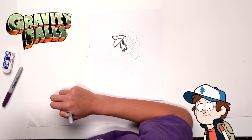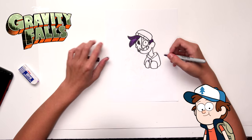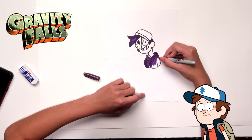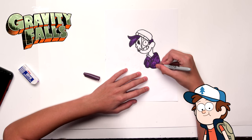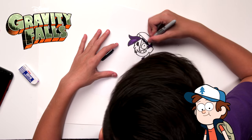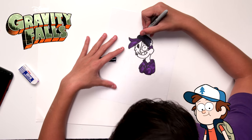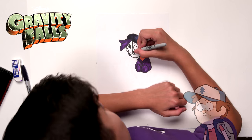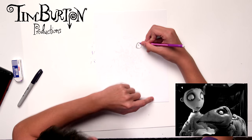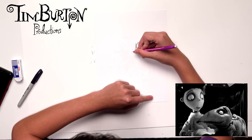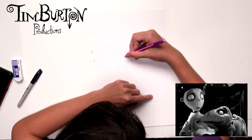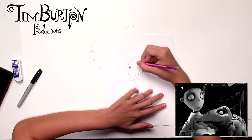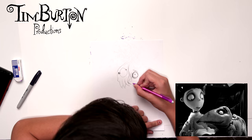You always have to add an expression to your characters so they don't look dead inside. Gravity Falls is about a brother, Dipper, and his sister Mabel — they go to Gravity Falls, Oregon, to live with their uncle and solve mysteries. It's a really good show, especially season two — it's way better than the first. The show gets better as it progresses. Next we're going to be drawing Tim Burton style. He's the one that made Nightmare Before Christmas and all the creepy movies, so I'm going to try to draw in his art style.